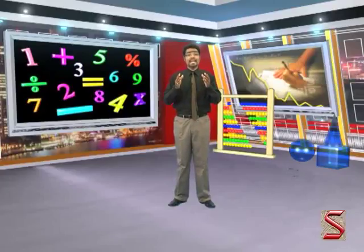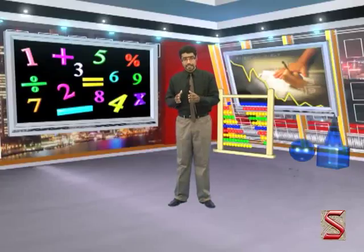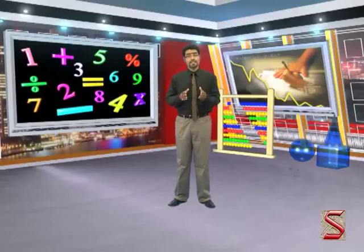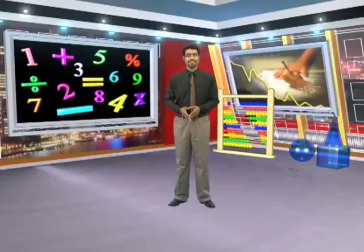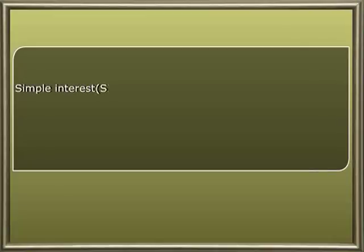Simple interest (SI) is the extra money paid by people along with the main amount that's borrowed. The formula for SI is: simple interest equals principal multiplied by time multiplied by rate of interest, divided by hundred.